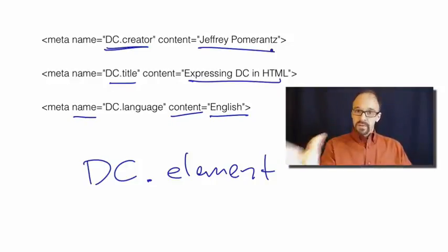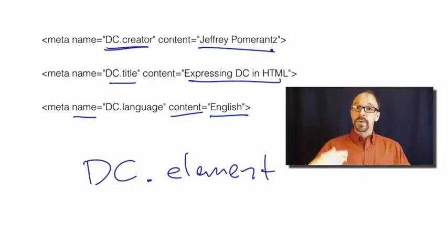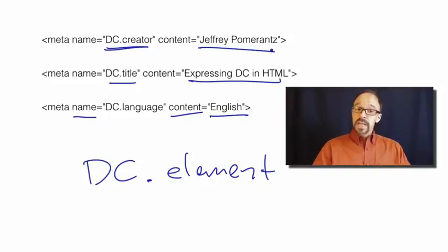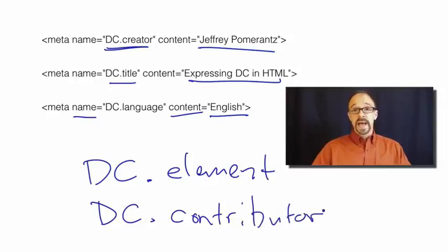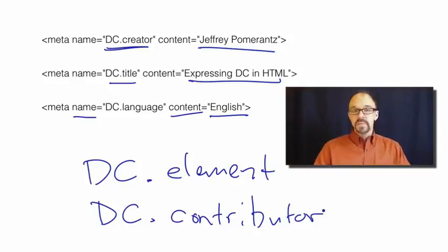Notice that there is one element-value pair per meta tag. Also remember the dumb down principle: if you don't need an element, you just leave it off. And if you need an element more than once, you repeat it with different values. So I could, for example, create a DC dot contributor meta tag and repeat that as many times as I want to include the names of all the people at the University of North Carolina who are contributing to the creation of these videos.